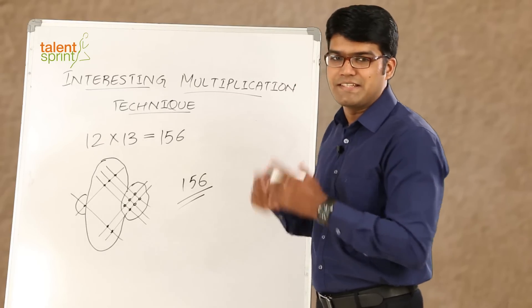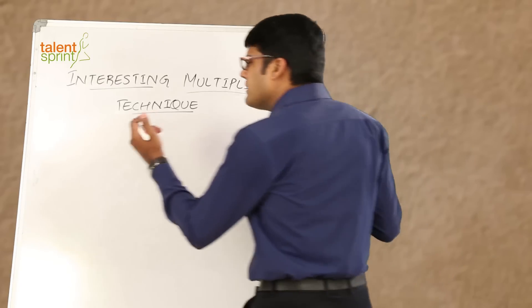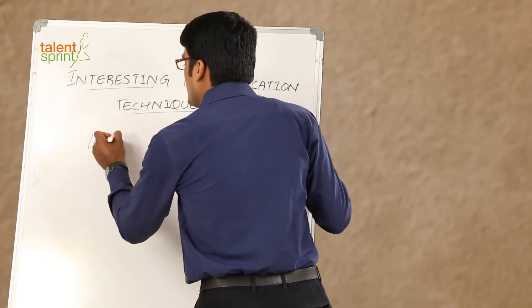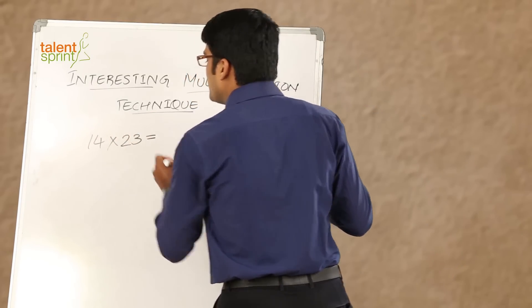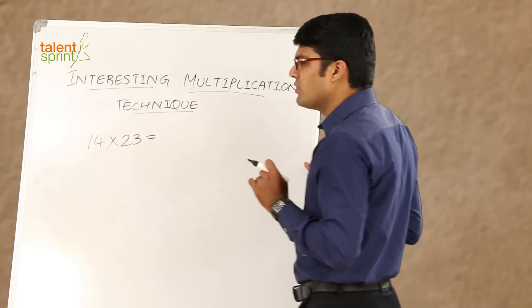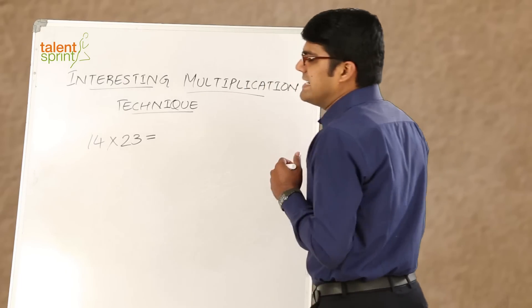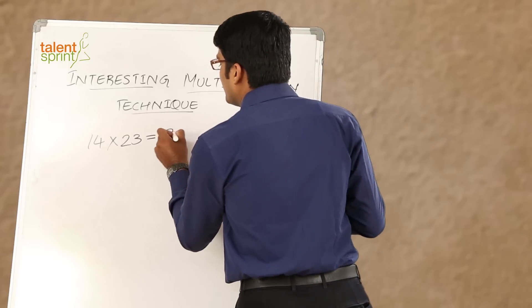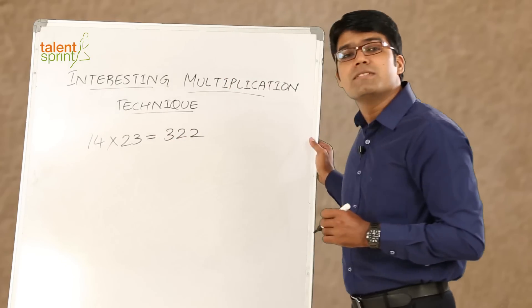So let us now multiply 14 with 23, right, 14 into 23. Now what is 14 into 23? I am sure you can multiply these two numbers in your head without having to put anything on paper. 14 into 23 would be 280 plus 42, that is 322, right. So 322 is the answer.